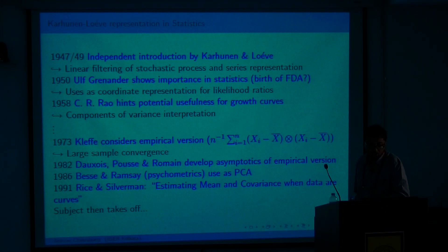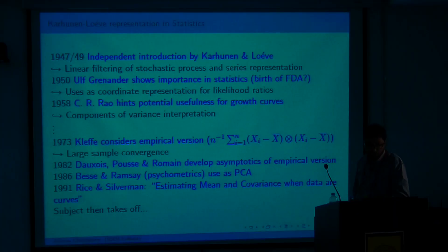Regarding the history of FDA: Karhunen and Loève used the expansion for linear filtering of stochastic processes. Ulf Grenander used coordinate representations for likelihood ratios. C.R. Rao used it for analysis of growth curves and components of variation. Dauxois, Pousse, and Romain developed asymptotics of the empirical covariance operator. Besse and Ramsay developed functional principal component analysis, after which the field really took off from the 1990s onward and expanded greatly from 2000s to the present.